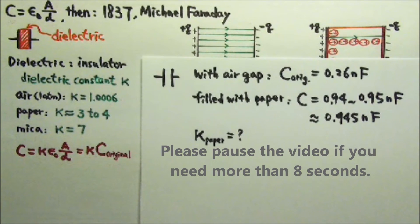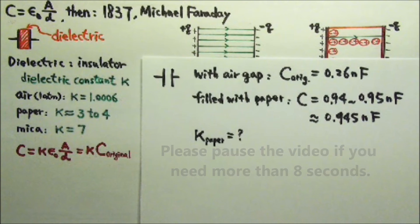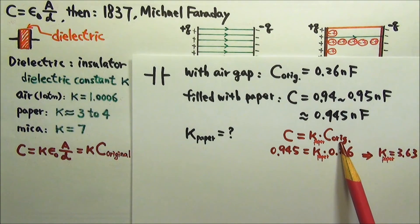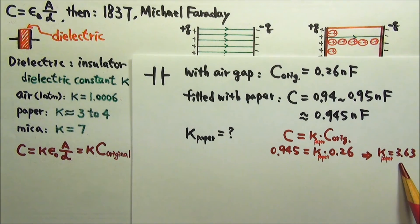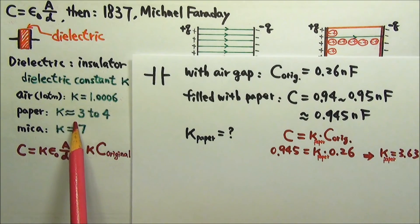Let's take a look. C equals to kappa times the original capacitance. So 0.945 equals to kappa times 0.26, and we get kappa equals to 3.63, which does fall within this range.